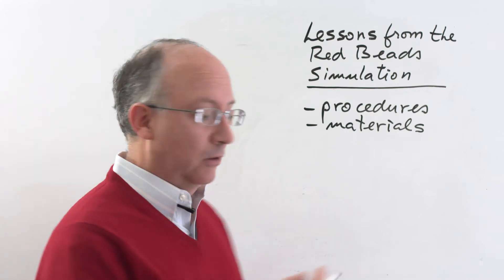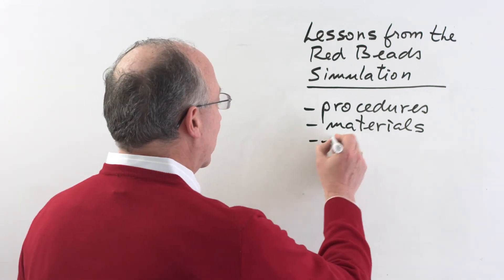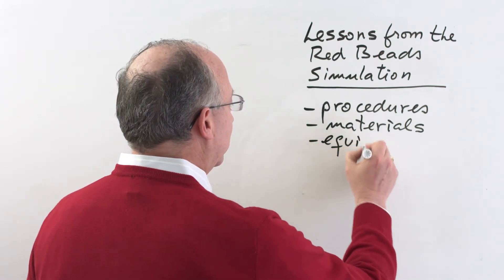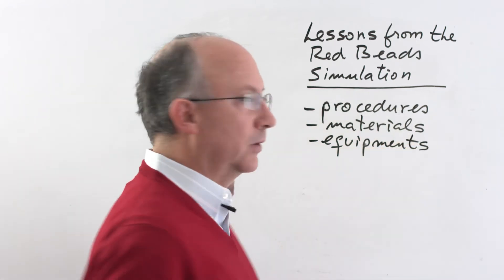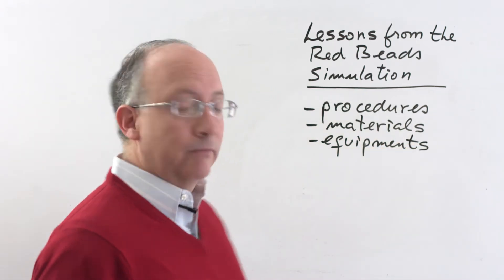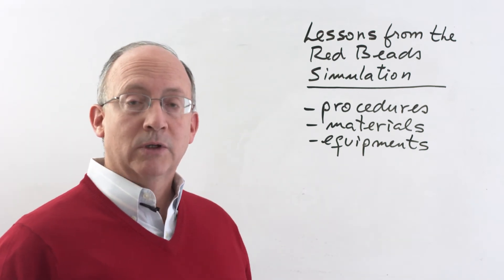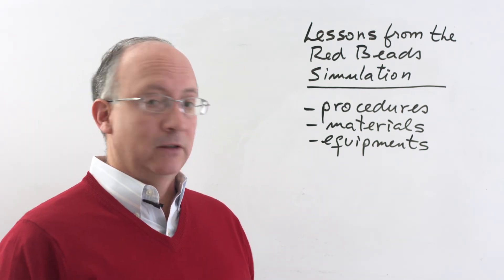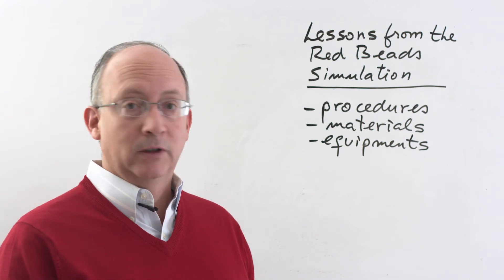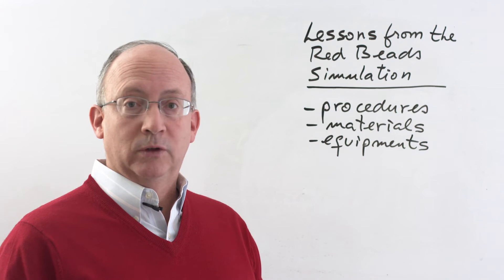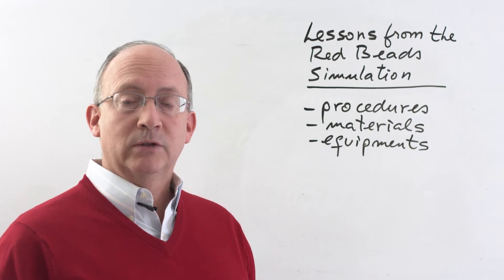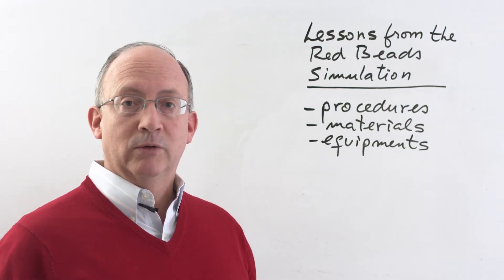In third place, a system of production will be made of the equipment. The equipment that is put in the hands of the employees or workers in order to do their job. In our case, was the paddle, a paddle that had 50 holes, five rows of 10 holes each, where all the beads could sit, and then we could count and determine how many of those were red.